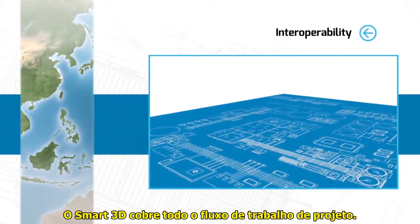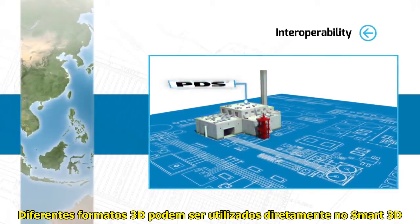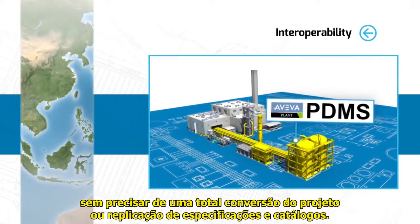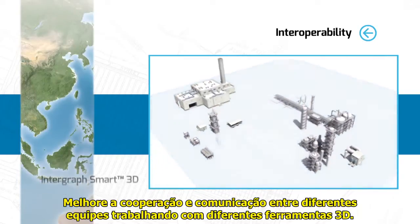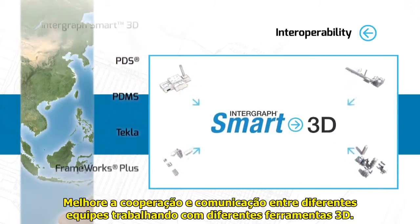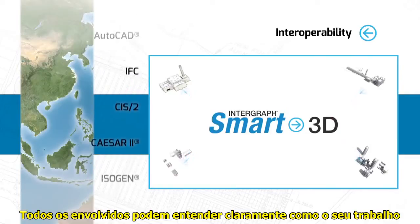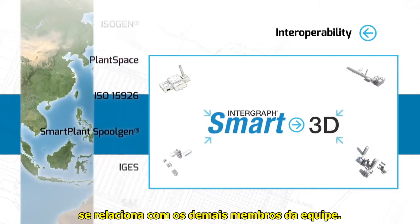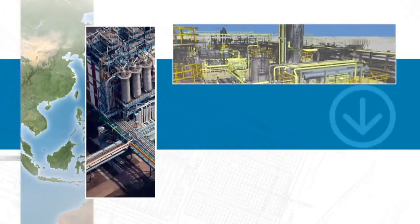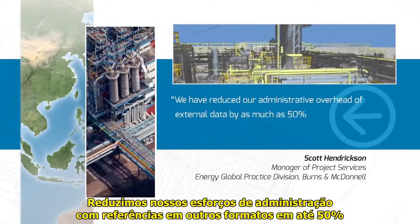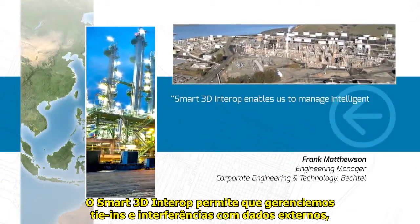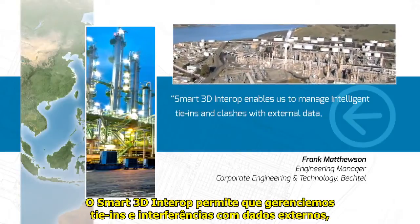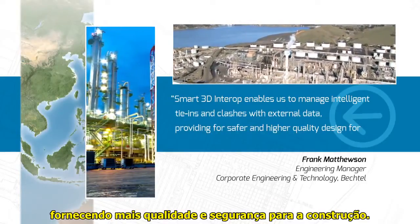Smart 3D covers your complete design workflow. Different 3D formats can be used directly in Smart 3D without having to go through a full project conversion or turn over detailed specs and catalogs. Enhance cooperation and communication among different teams working with different 3D tools — all parties can clearly understand how their work relates to others on the team. We have reduced our administrative overhead of external data by as much as 50% over using the traditional reference file. Smart 3D enables us to manage intelligent timelines and clashes with external data, providing for safer and higher quality design for construction.